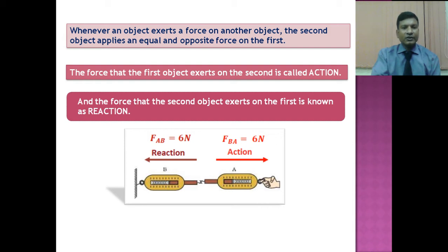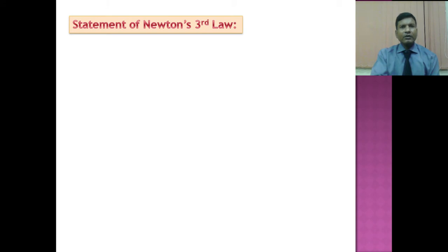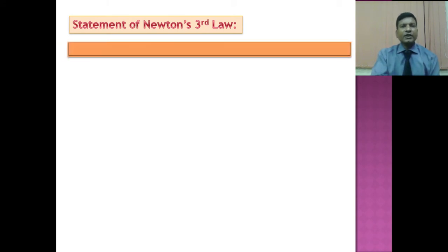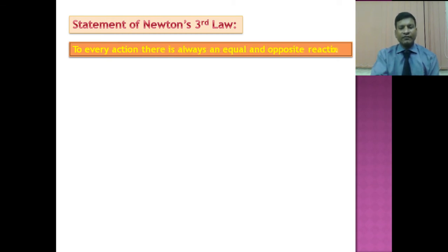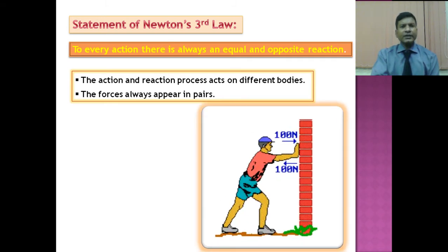Therefore, the net force will be zero. Students, remember: in an interaction of two objects, any object can be named as the first object. According to Newton's third law of motion, to every action there is always an equal and opposite reaction. The action and the reaction act on different bodies — they cannot act on one body. Remember this, this is very, very important.